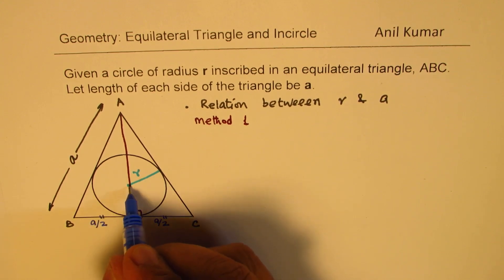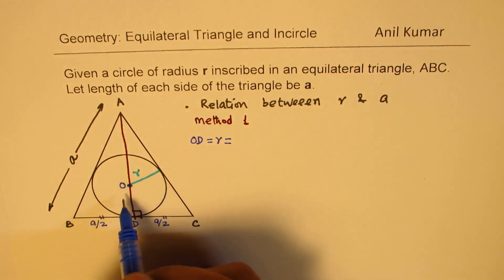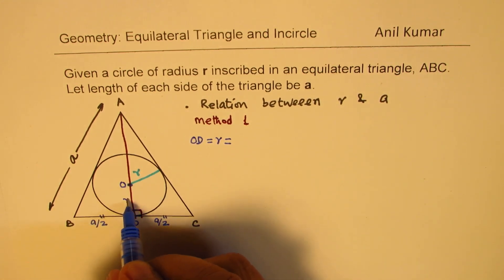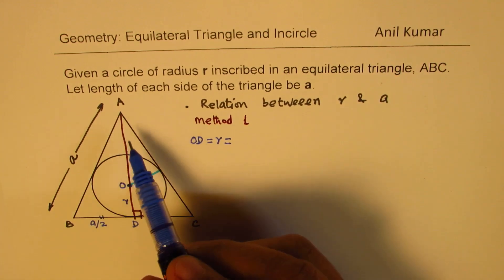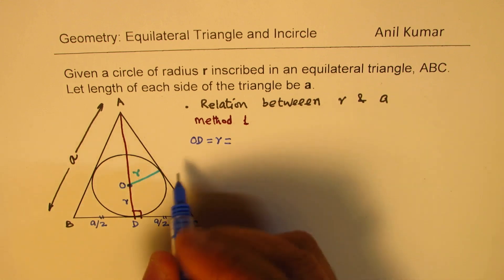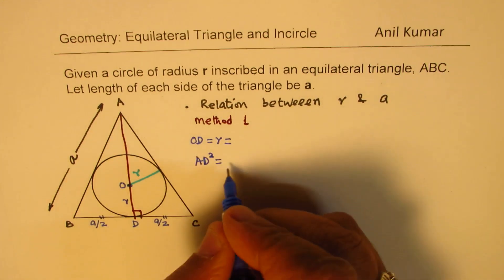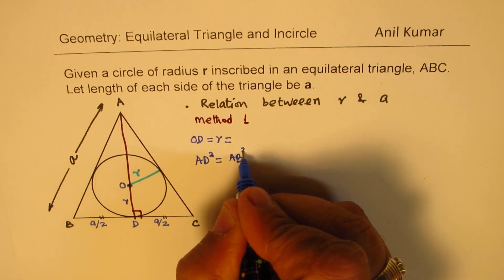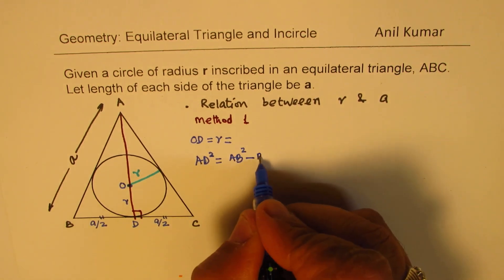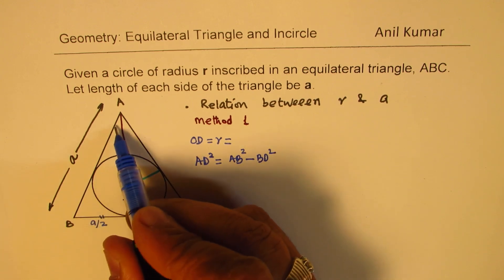Now, r is also this length. Let's say call this as O, then OD is also r. So OD is equal to r. So this is also r. Now, in the bigger triangle, AD can be found using the formula AD squared equals AB squared minus BD squared. That is Pythagorean theorem. So sum of these two squares is the hypotenuse square. If you have to find length of a shorter leg, then there's difference.